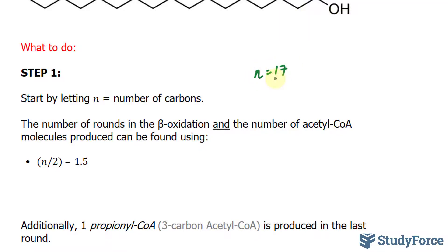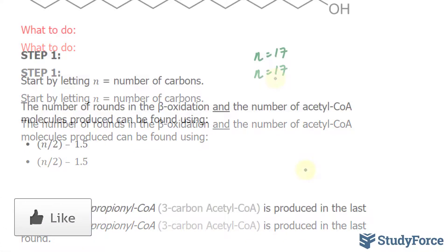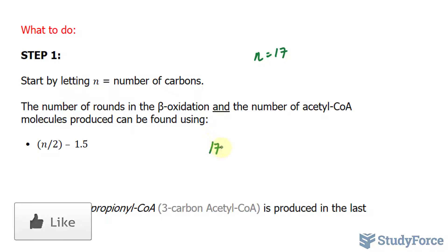The number of rounds of beta-oxidation and the number of acetyl-CoA molecules produced can be found using this formula. So we'll take 17 and divide it by 2, then subtract 1.5. 17 divided by 2 is 8.5, and if we take away 1.5 from that, we end up with 7.